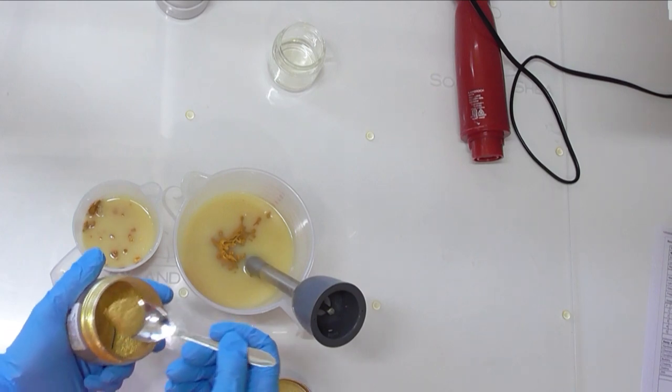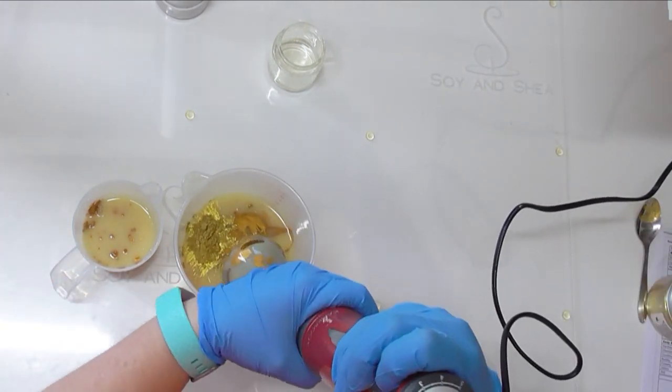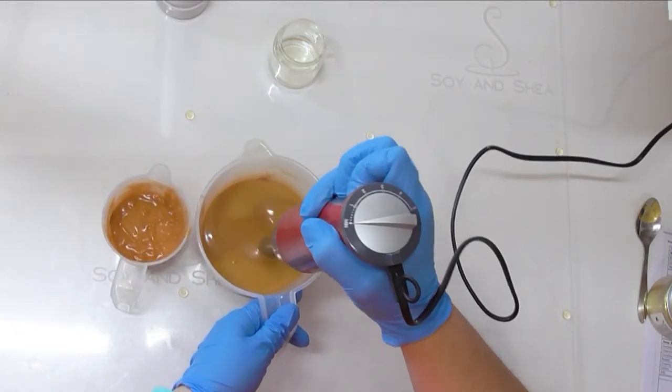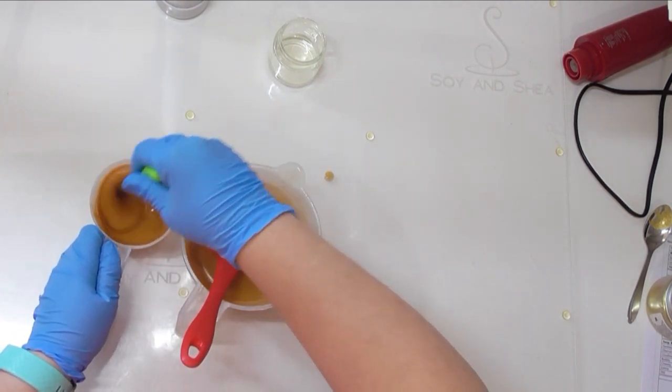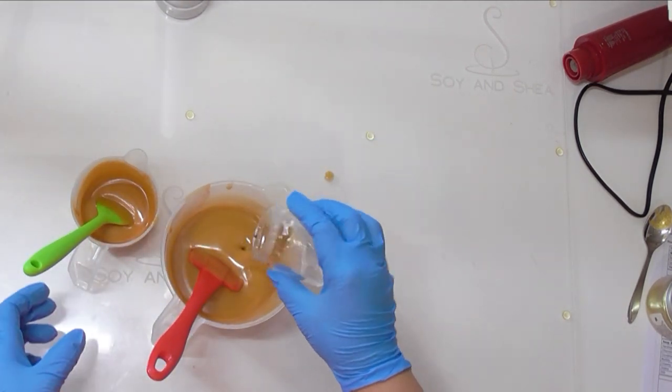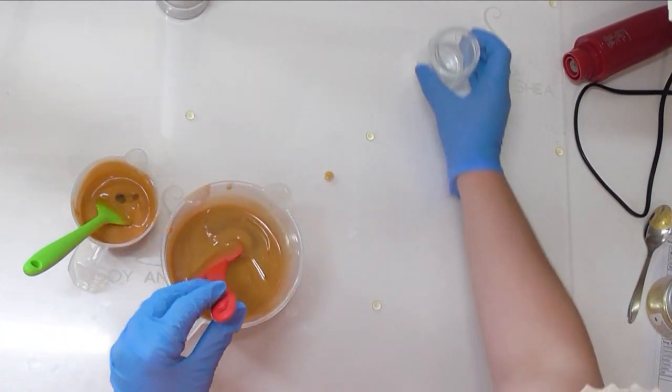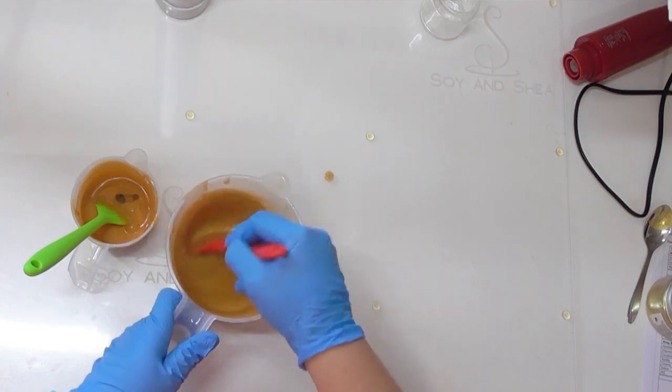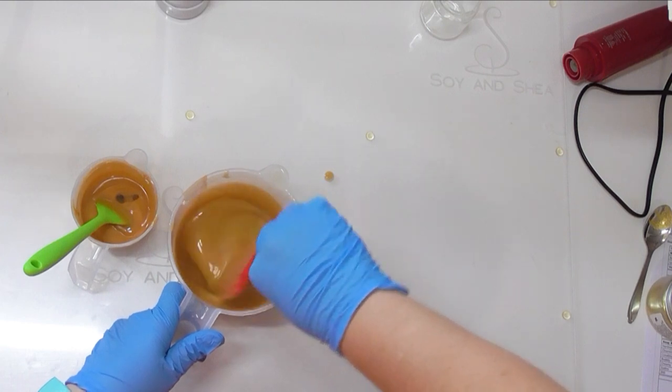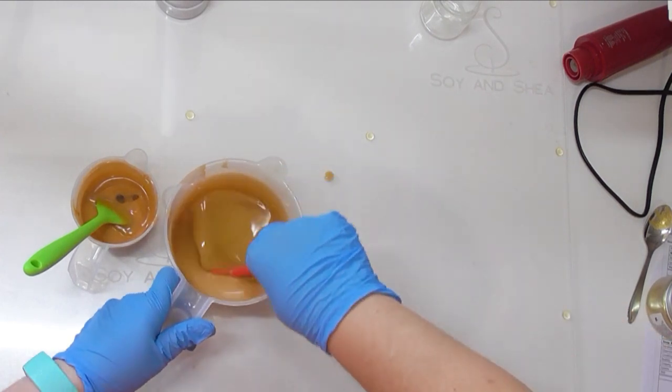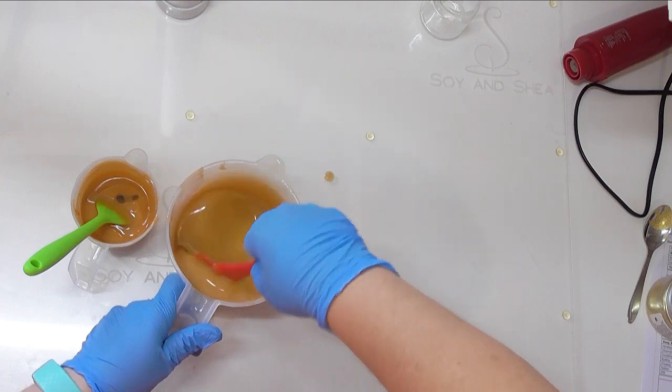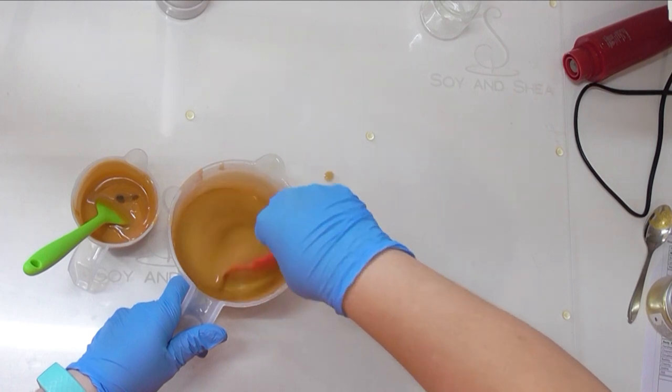Now even though this fragrance oil is full of floral notes, in particular waterlily—because I've had fragrance oils with waterlily that accelerate like nobody's business—I tried making a star embed earlier using this fragrance oil and it behaved really well. The embed didn't work, but the fragrance oil was well behaving despite all these floral notes, so I know I've got plenty of work time. I'm going to do an in-the-pot swirl of the two golds and then pour it into our prepared PVC mold.